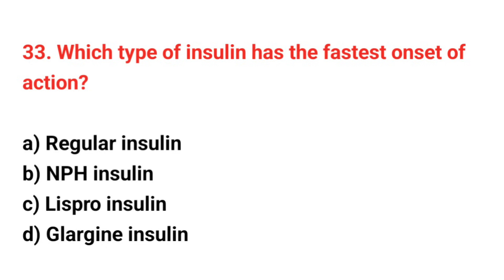Question number 33: Which type of insulin has the fastest onset of action? The right answer is option C: Lispro insulin.